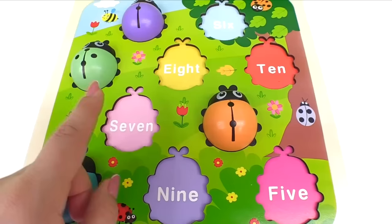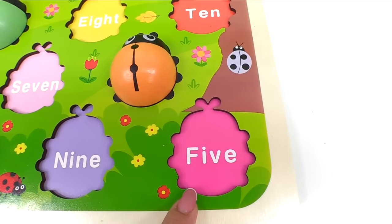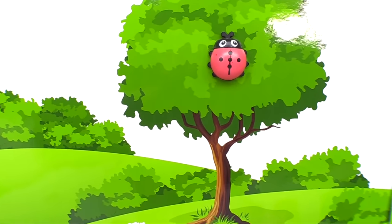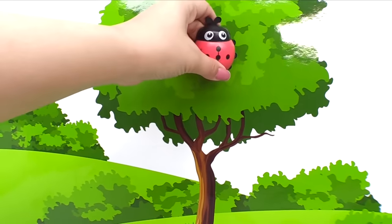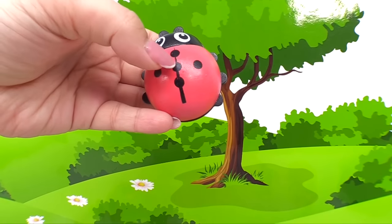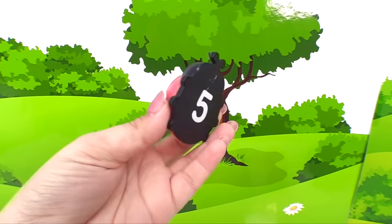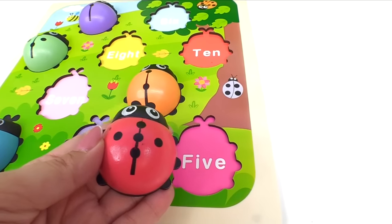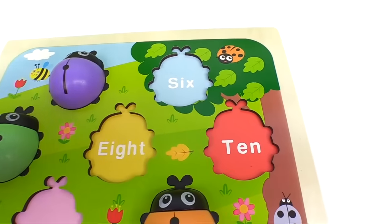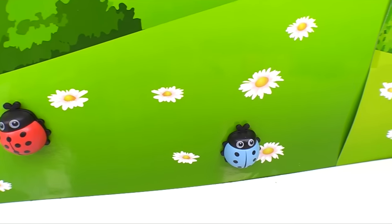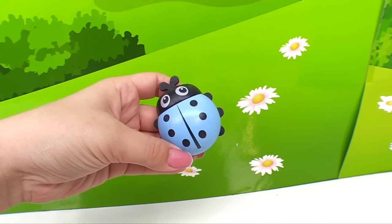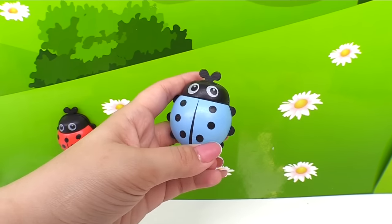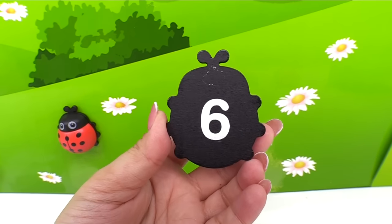Great job. What's next? We're looking for the number five — a pink ladybug with five spots. Who's hiding in the tree? It's a pink ladybug with one, two, three, four, five spots. It's number five on the back. Now we can take the number five ladybug and put it right here. Next is the ladybug with number six — it's light blue. Here it is. Let's count its spots: one, two, three, four, five, six spots. And when we flip it around, here's number six.